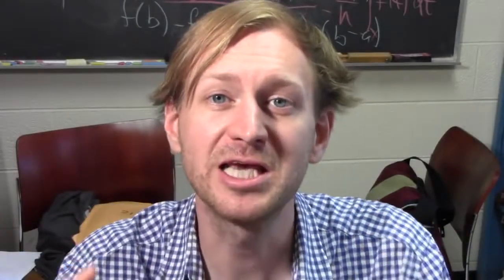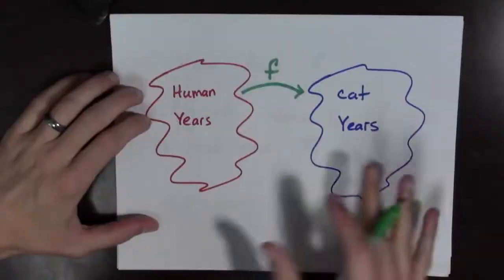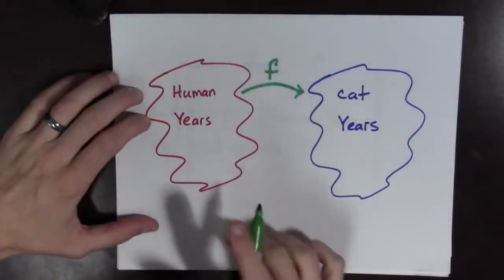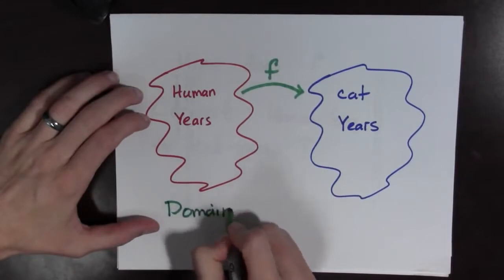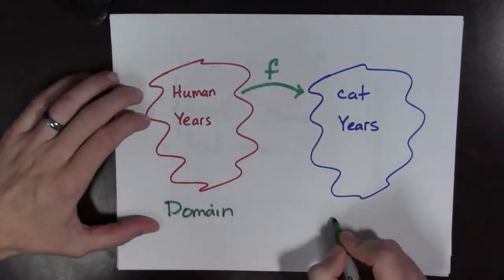So this is one key point about functions. Functions have inputs, and they have outputs. The inputs are called the domain, and the outputs are called the range.